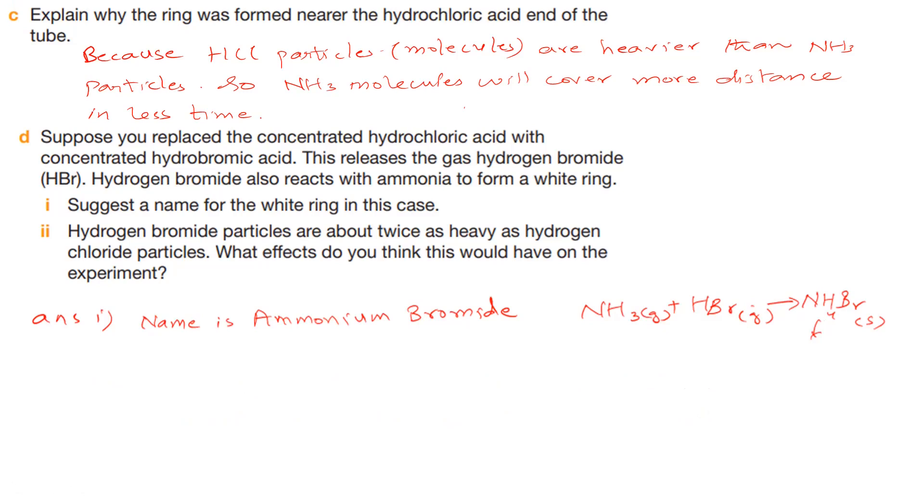Second question: Hydrogen bromide particles are about twice as heavy as hydrogen chloride particles. What effect do you think this would have on the experiment? The ring will form closer, about half the distance made through HCl solution to the hydrogen bromide end, because hydrogen bromide is double the mass and heavier than hydrogen chloride, so it will take much more time to release its molecules towards ammonia.